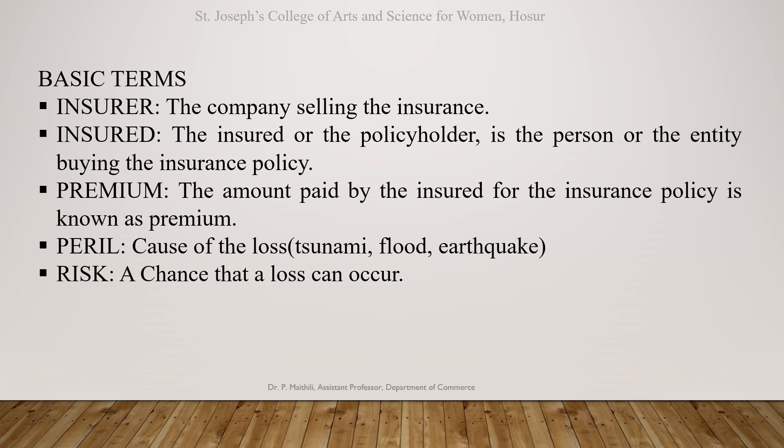Peril means the cause of loss. For example, tsunami, flood, or earthquake — these are examples of perils. Risk — a chance that a loss can occur. The insurance company compensates the loss only when the risk occurs.